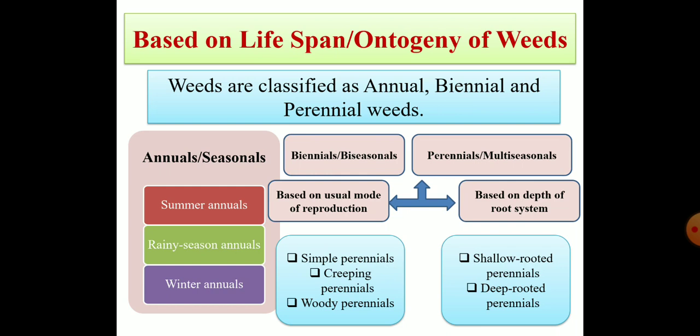If we look at the flowchart, annuals are further divided into three categories: summer annuals, rainy season annuals, and winter annuals. Then we have biennials or biseasonals. Perennials or multiseasonals have been categorized into two further groups based on the usual mode of reproduction — giving us simple perennials, creeping perennials, and woody perennials — and based on the depth of the root system, giving us shallow rooted perennials and deep rooted perennials.